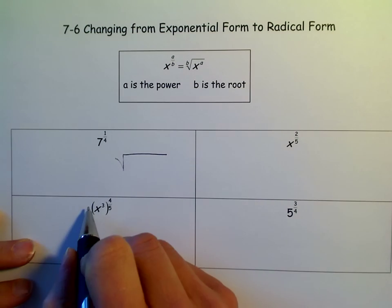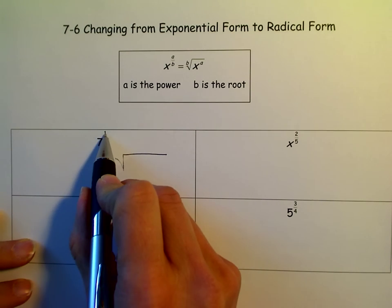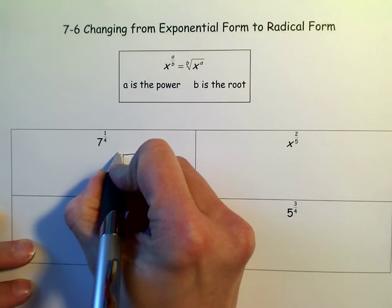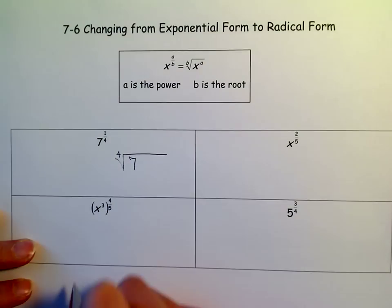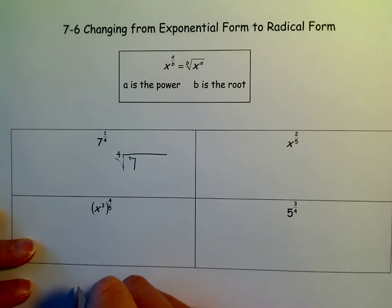So we change this to radical. This becomes the power on the 7, this becomes the index. So we put the 4 there, and we don't have to put the 1 on the 7 because 7 to the first power is just 7.